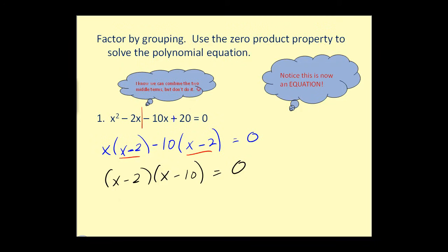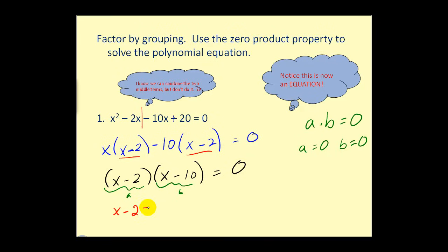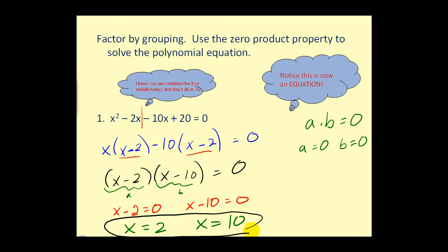The zero product property tells us that if two things multiply to zero, one of them must be zero — either a equals zero or b equals zero. Applying this here, either x minus two equals zero or x minus ten equals zero. Solving each for x, we get x equals positive two and x equals positive ten. These two x values each make one of the factors zero, so their product is zero. This shows why factoring is important for solving equations, and we will revisit this in the next several videos.